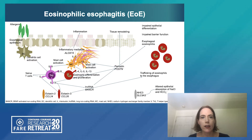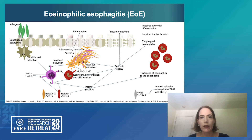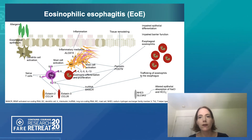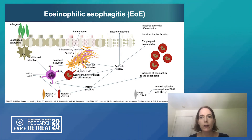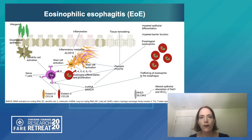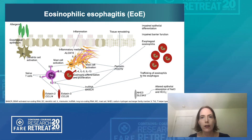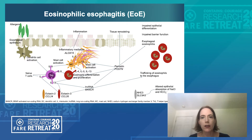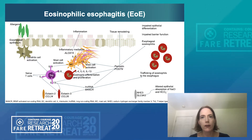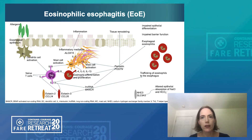Eosinophilic esophagitis is characterized biologically by esophageal inflammatory infiltrates, including eosinophils, T-cells, mast cells, and basophils, as well as type 2-associated inflammatory chemokines and cytokines, such as eotaxin 3, interleukin 4, 5, and 13. Chronic esophageal inflammation leads to remodeling, stricture formation, and fibrosis with the associated worsening of clinical symptoms, such as dysphagia.